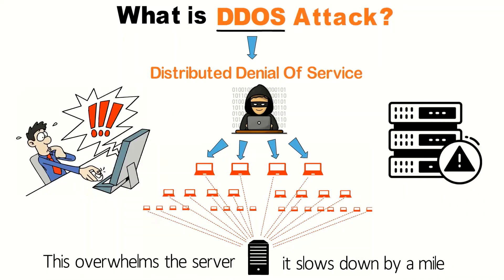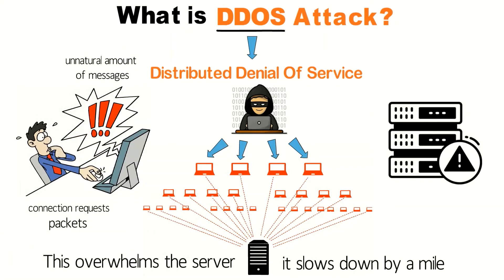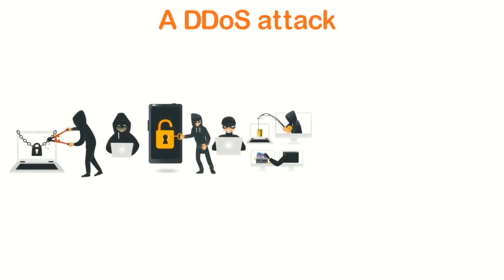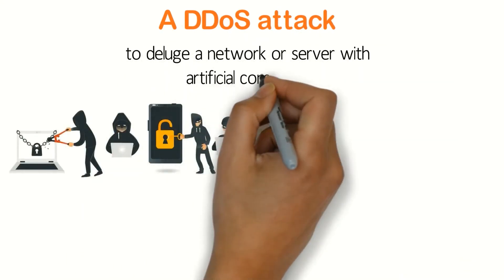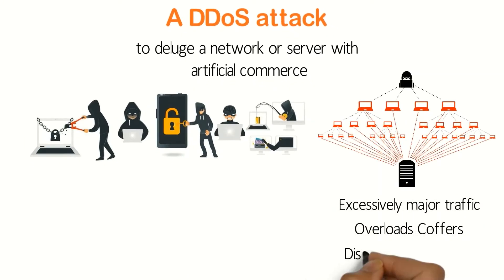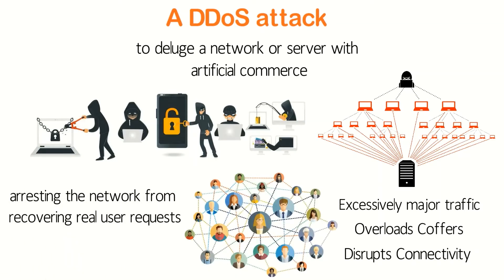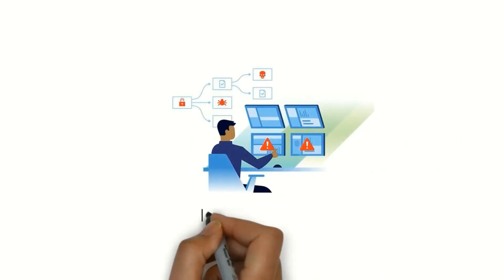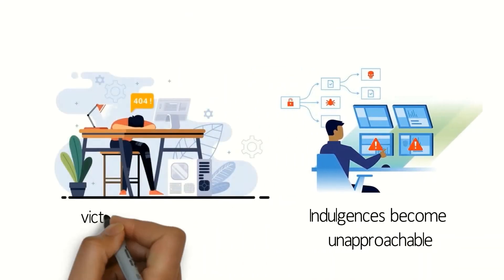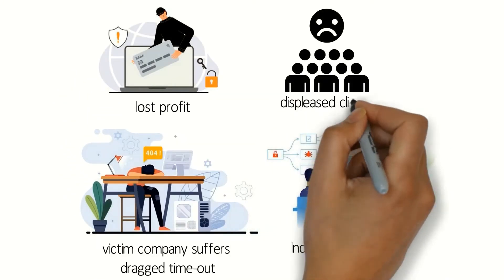This is a matter of seconds in which you will receive an unnatural amount of messages, connection requests, and packets that will damage your server's infrastructure in such a way that it will break down in minutes. A DDoS attack enables a hacker to flood a network or server with artificial traffic. Excessively high traffic overloads resources and disrupts connectivity, preventing the network from processing real user requests. Services become inaccessible, and the victim company suffers downtime, lost profit, and dissatisfied clients.